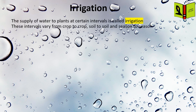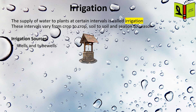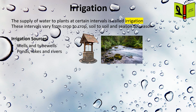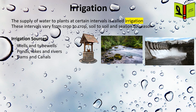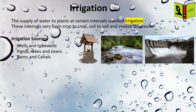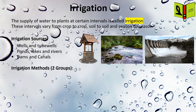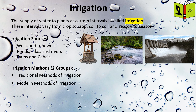The supply of water to plants at certain intervals is called irrigation. These intervals vary from crop to crop, soil to soil, and season to season. Irrigation sources include wells and tube wells, ponds, lakes, rivers, dams, and canals. Irrigation methods are classified into two types: Traditional Methods of Irrigation and Modern Methods of Irrigation.